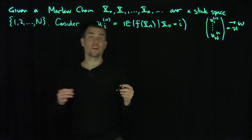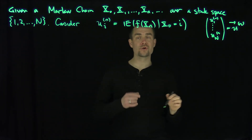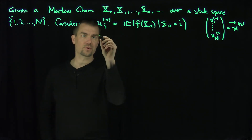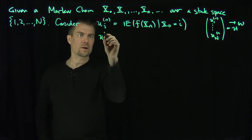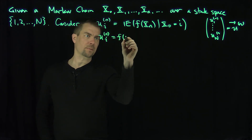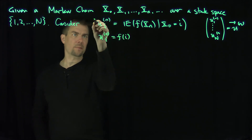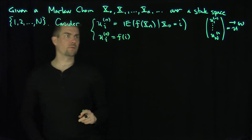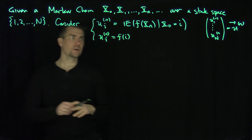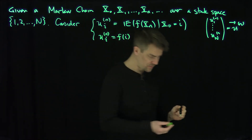I want to develop a recursion relationship for this column vector, so I need to put some initial conditions on this. I'm going to assume that u_{0,i} is just the given function — it's just going to be f of i. So that's my setup for the recursion. Now let's build it.